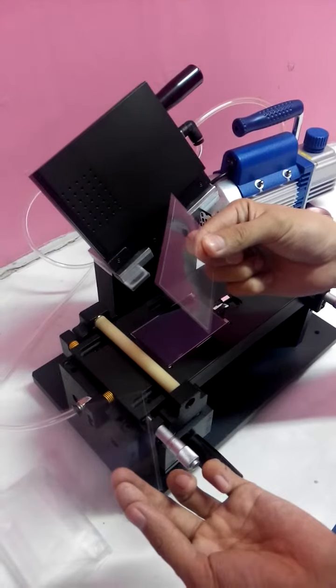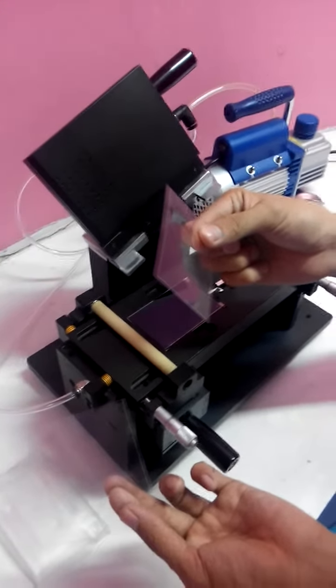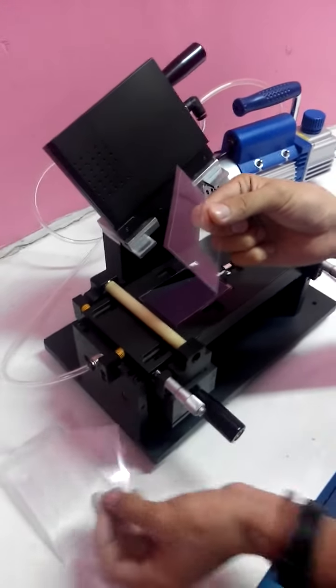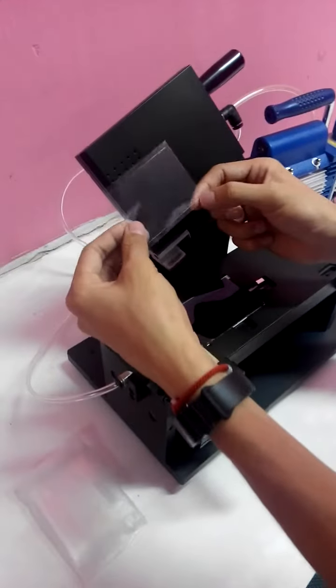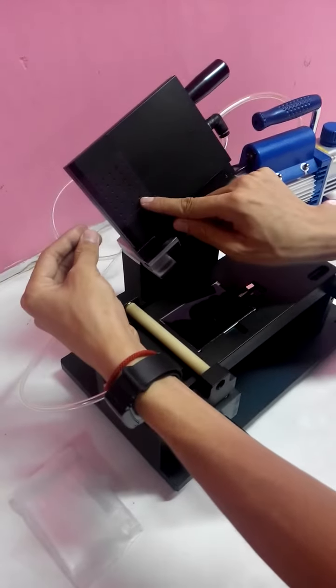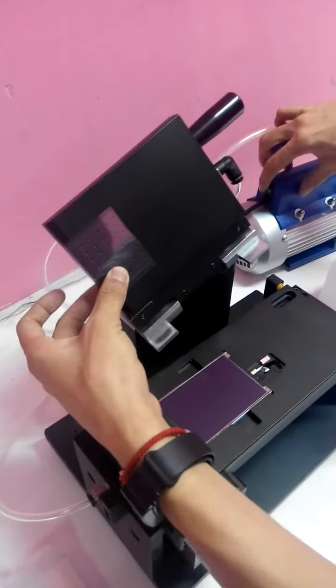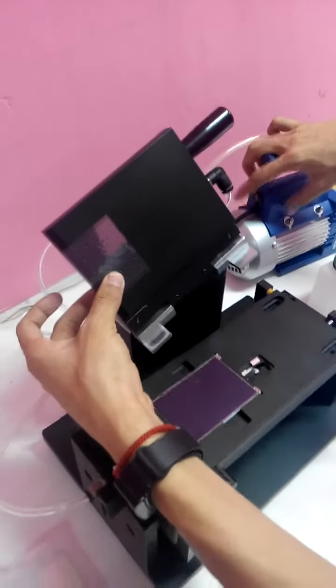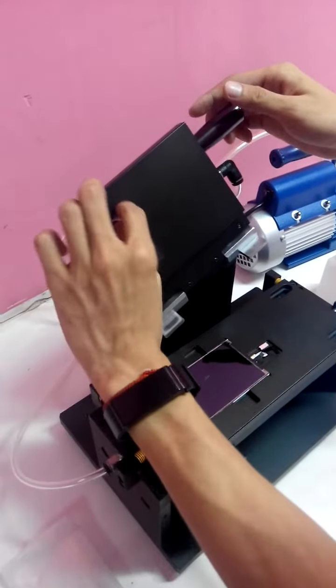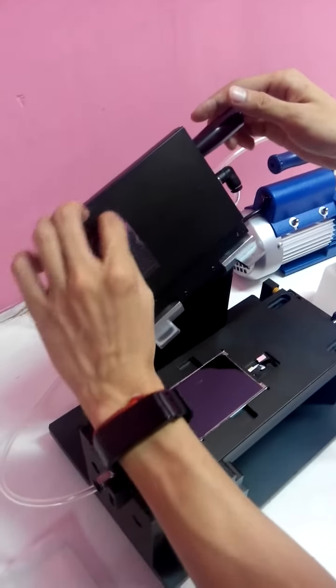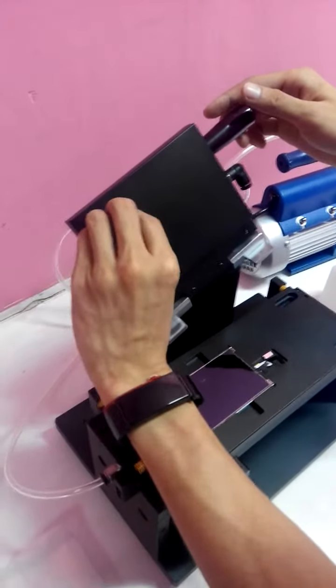First, we tear off the protector. Now we open the pump. Then we tear off another film protector.